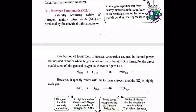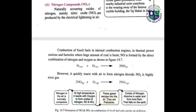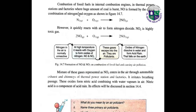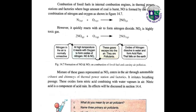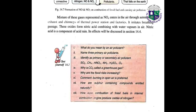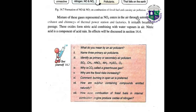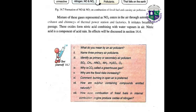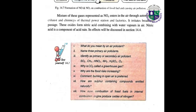Nitrogen compounds. Naturally occurring oxides of nitrogen, mainly nitric oxide, are produced by electrical lightning in air. Combustion of fossil fuels in internal combustion engines, thermal power stations, and factories where huge amounts of coal are burned also produces nitrogen oxides. NO is formed by the direct combination of nitrogen and oxygen, but it quickly reacts with air to form nitrogen dioxide. NO2 is a highly toxic gas. The mixture of these gases, represented by NOx, enters the air through automobile exhausts and chimneys of thermal power stations and factories. It irritates the breathing passage. These oxides form nitric acid by combining with water vapors in air.